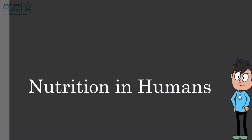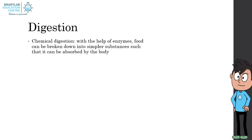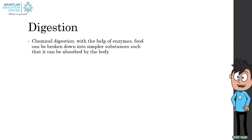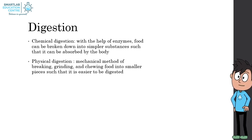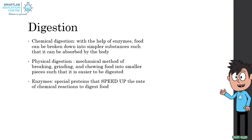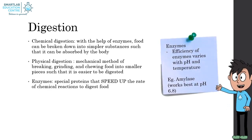Nutrition in humans: the digestive system. What is digestion? There are a few ways of digestion. Chemical digestion: with the help of enzymes, food can be broken down into simpler substances such that it can be absorbed by the body. Physical digestion: a mechanical method of breaking, grinding, and chewing food into smaller pieces such that it is easier to be digested. Enzymes are special proteins that speed up the rate of chemical reactions to digest food.